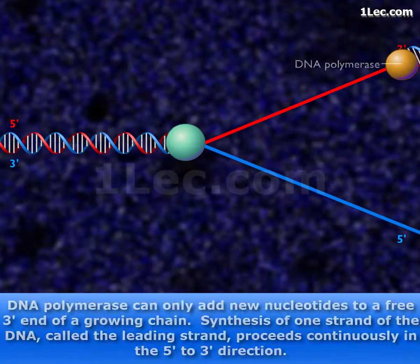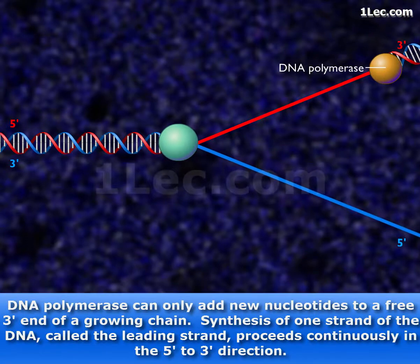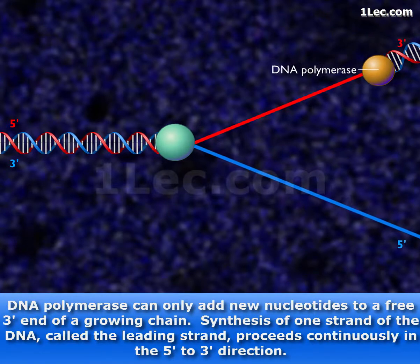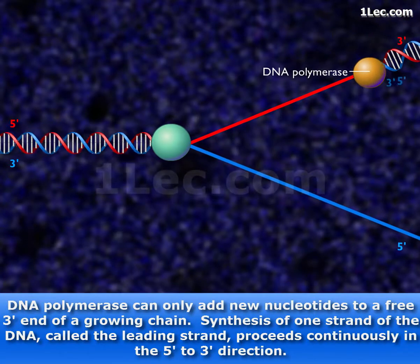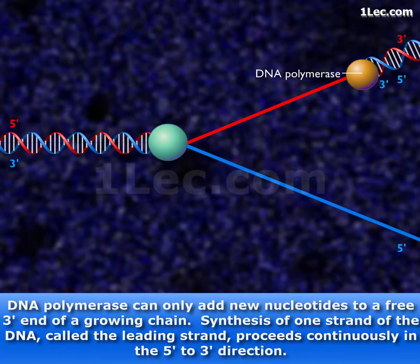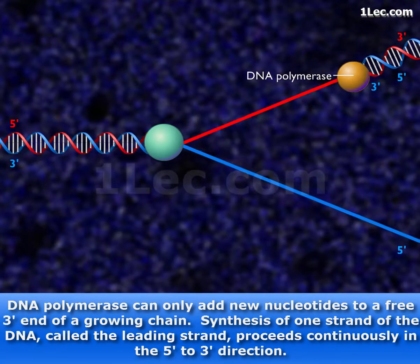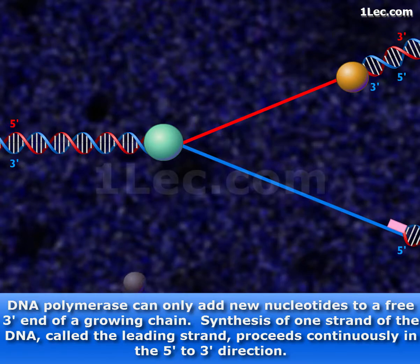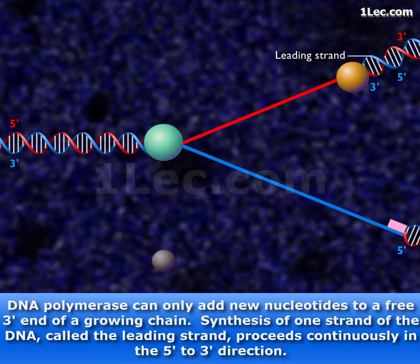DNA polymerase can only add new nucleotides to a free 3' end of a growing chain. Synthesis of one strand of the DNA, called the leading strand, proceeds continuously in the 5' to 3' direction.